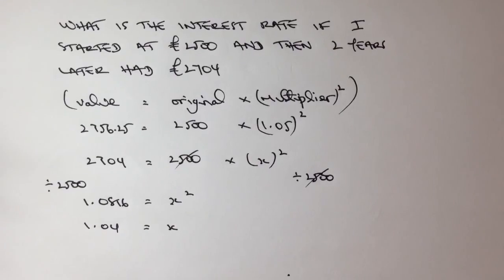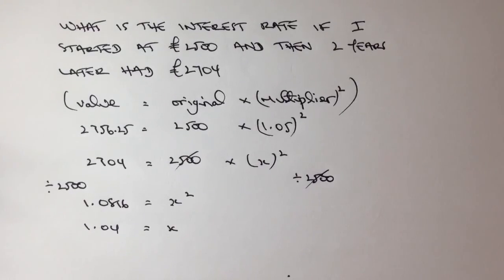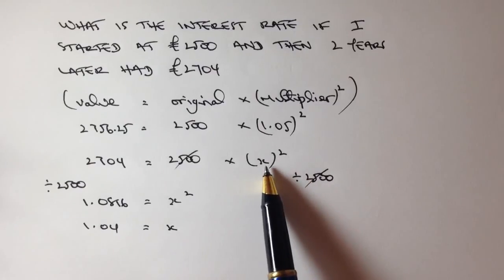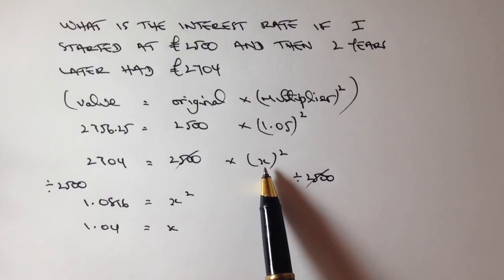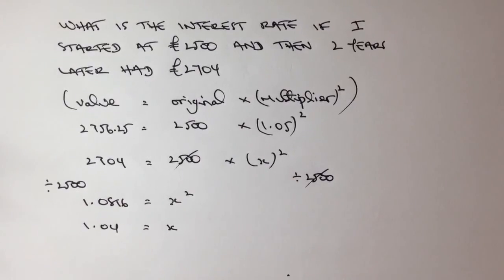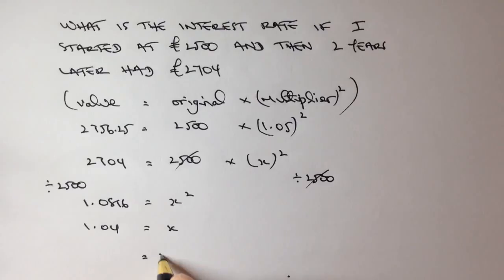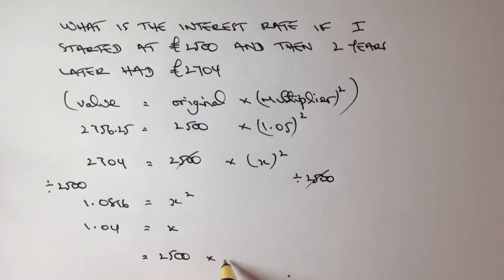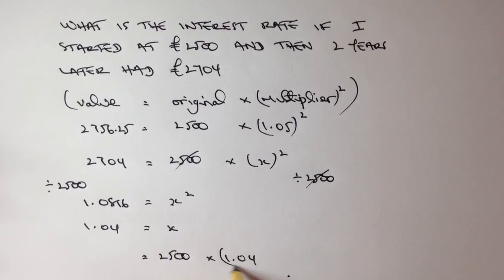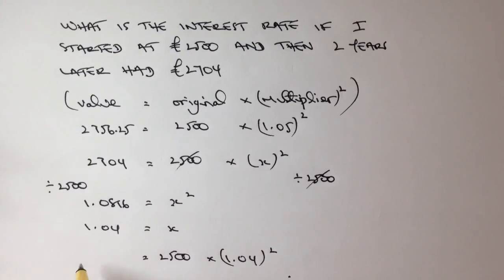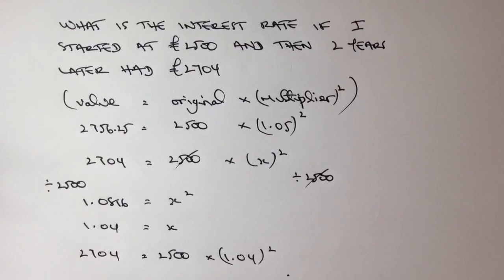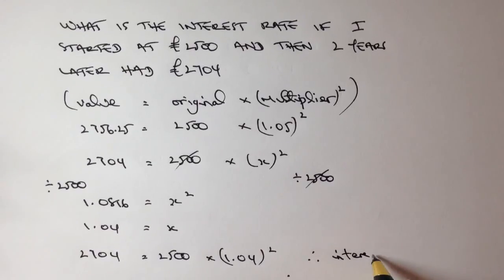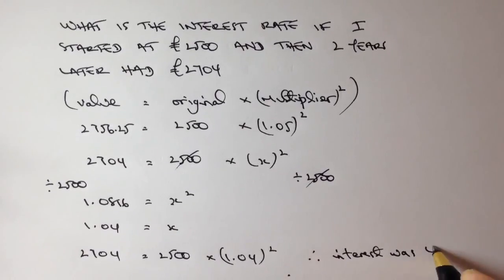So what it means is that 1.04 is the missing bit that goes into this formula, which tells me that the interest rate, in order to answer this question, would be 4%. So let's just check that. If I put this into a calculator, 2,500 times 1.04 squared, and if I put that into a calculator, I get 2,704, which is exactly what it asked me. So I can say here, therefore, the interest was 4%. I hope that's been OK for you.